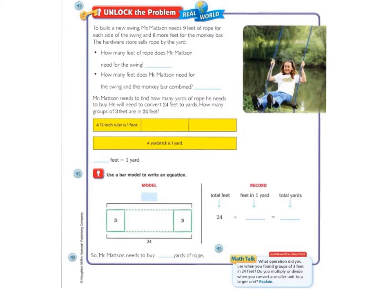Let's unlock the problem. To build a new swing, Mr. Mattson needs 9 feet of rope for each side of the swing and 6 more feet for the monkey bar. The hardware store sells rope by the yard. The first question asks us, How many feet of rope does Mr. Mattson need for the swing? Well, we just read that Mr. Mattson needs 9 feet of rope for each side. So these two sides equal 9 feet. So 9 plus 9 equals 18 feet.